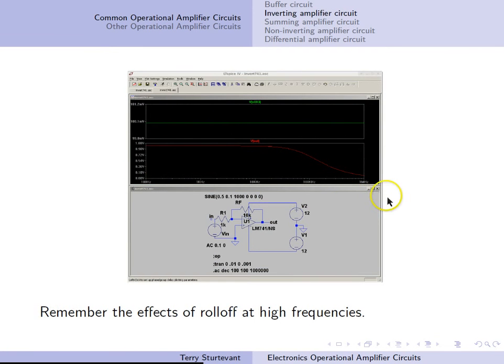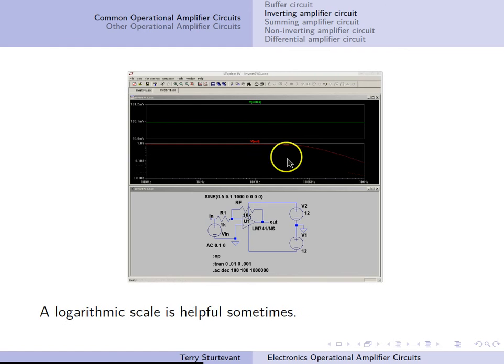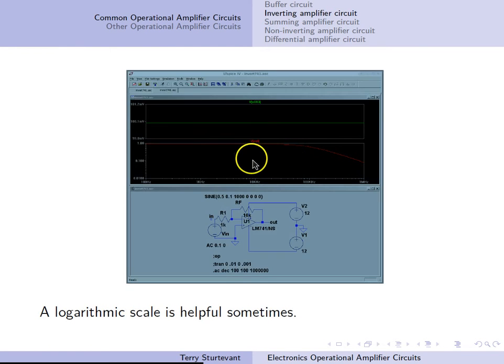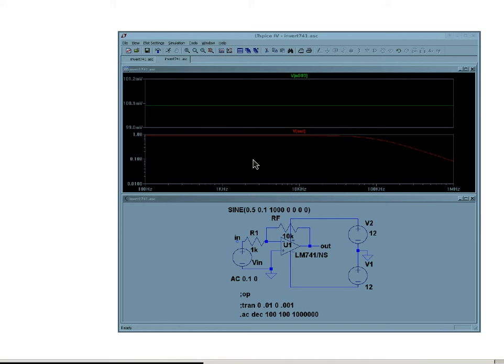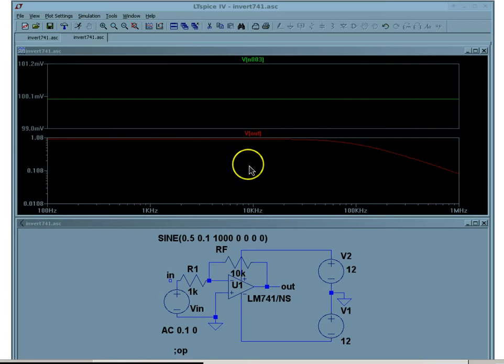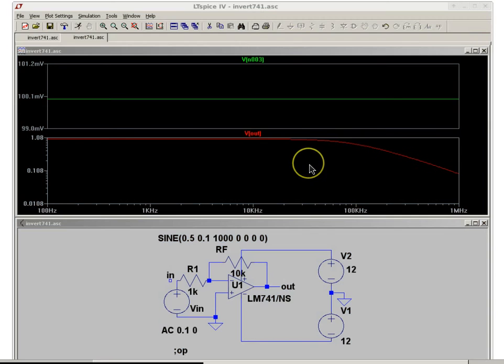Now at high frequencies, the gain decreases. This is called roll-off. We can see that the gain stays the same up until we get to about 10, 20, 30, 40 kilohertz. At about 40 or 50 kilohertz in this case, the gain starts to drop off. That's called roll-off.